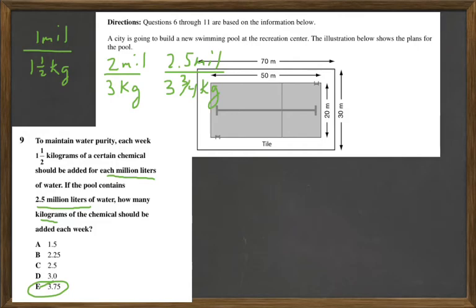Another way to tackle this would be to set it up as a proportion. We had 1.5 kilograms to 1 million. And then I know that I'm looking for x kilograms if I have 2.5 million.